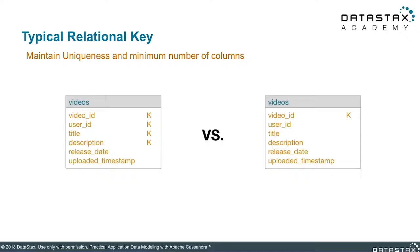When thinking back to the keys used in traditional relational databases, the whole purpose of the primary key is to maintain uniqueness for each row that is inserted into the table, while minimizing the number of columns needed to form the primary key. In our example below, both video tables here work perfectly fine for describing a unique row. However, the table on the left includes several other columns that are not necessary for the purpose of uniqueness.